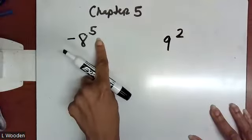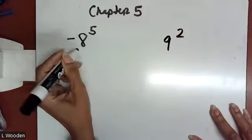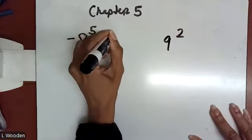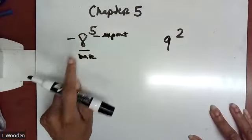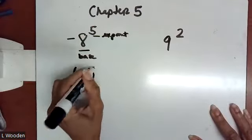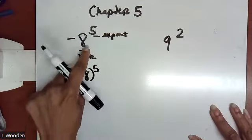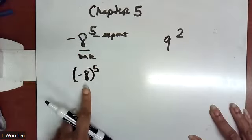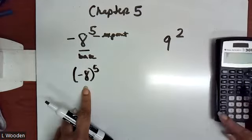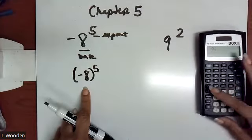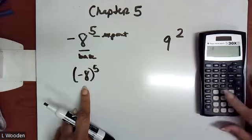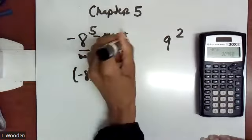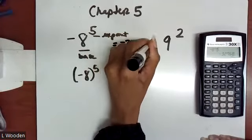Here we have negative eight to the fifth power. It's important to understand that the base is eight and the exponent is five. Exponents can only apply to what's directly next to them. Because there's no parentheses, the base is only the positive eight, not the negative. In your calculator, you would put negative eight carat five and the calculator gives you negative 32,768.